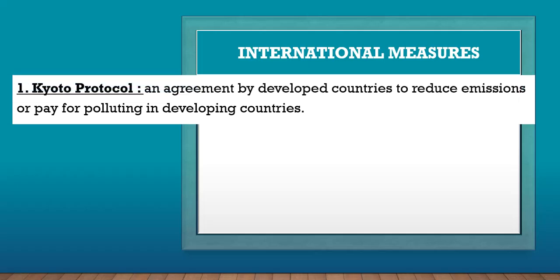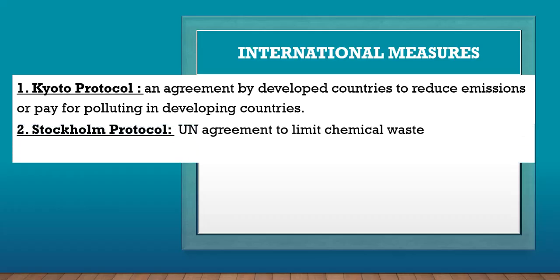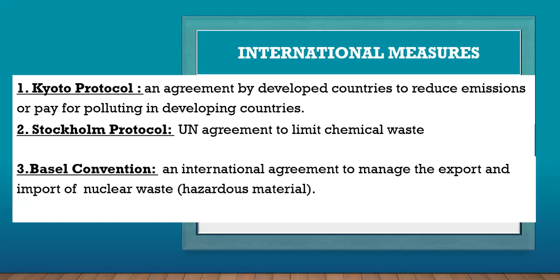There were also international measures. The Kyoto Protocol is an agreement by developed countries to reduce emissions. Under this convention, developed countries agreed to reduce their emissions or pay for polluting in developing countries. The Stockholm Protocol is another convention where an agreement was reached to reduce chemical waste.